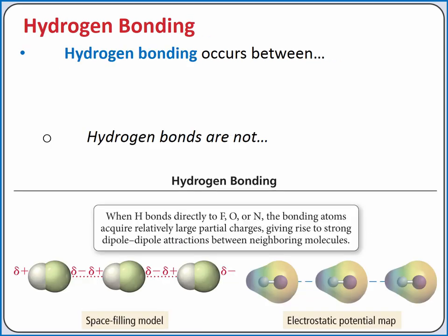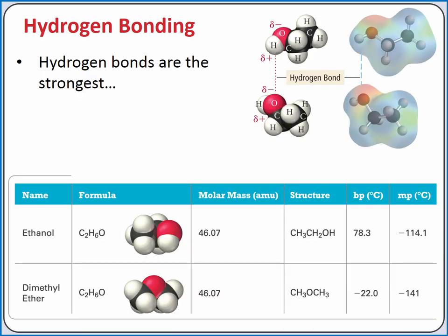Hydrogen bonding occurs between two molecules that have a hydrogen directly bonded to either a nitrogen, oxygen, or fluorine atom. Hydrogen bonds are not actually bonds — they are intermolecular forces. You can think of hydrogen bonding as particularly strong dipole-dipole forces, because of the large electronegativity differences between hydrogen and nitrogen, oxygen, or fluorine, and the relatively small size of these atoms. Hydrogen bonds are the strongest intermolecular force present in a pure substance.